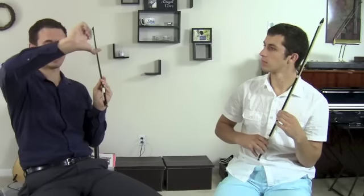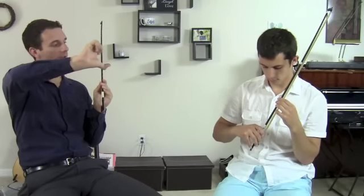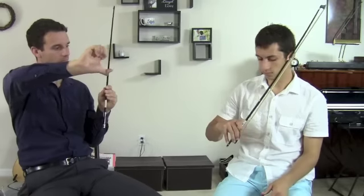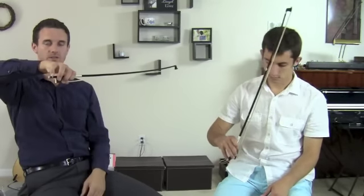And then really important, this happens all the time, I see students with a tense thumb. Curve that thumb. Kyle, you're actually doing that pretty well. Yeah. It's like that. Key to successful bow grip.